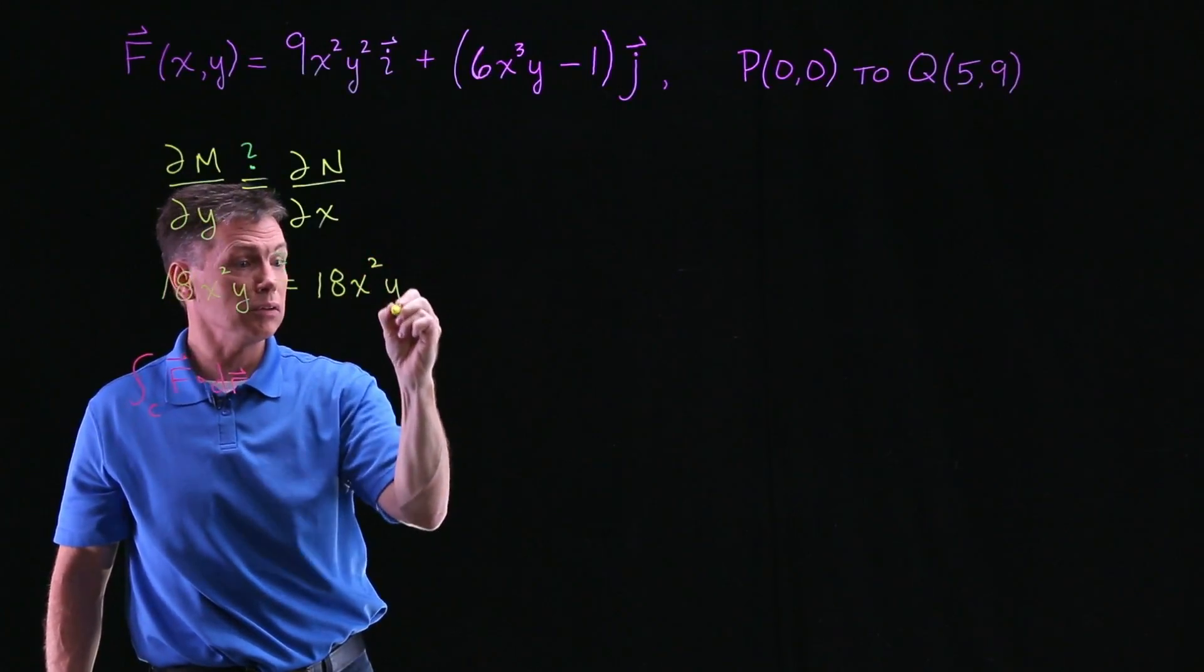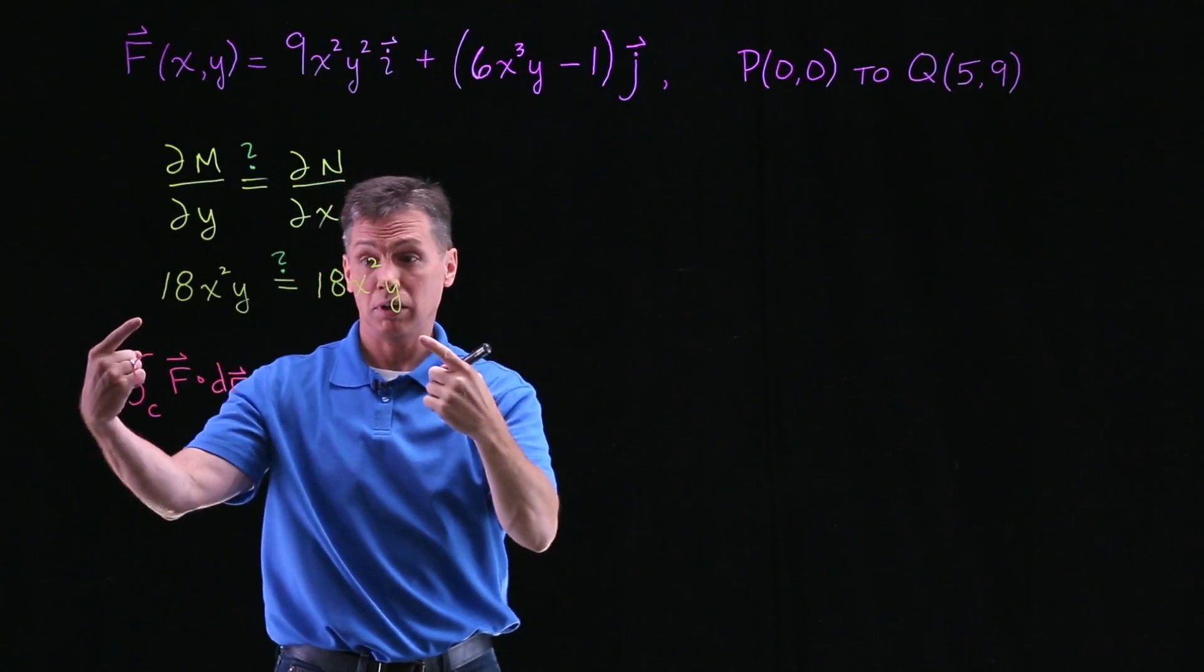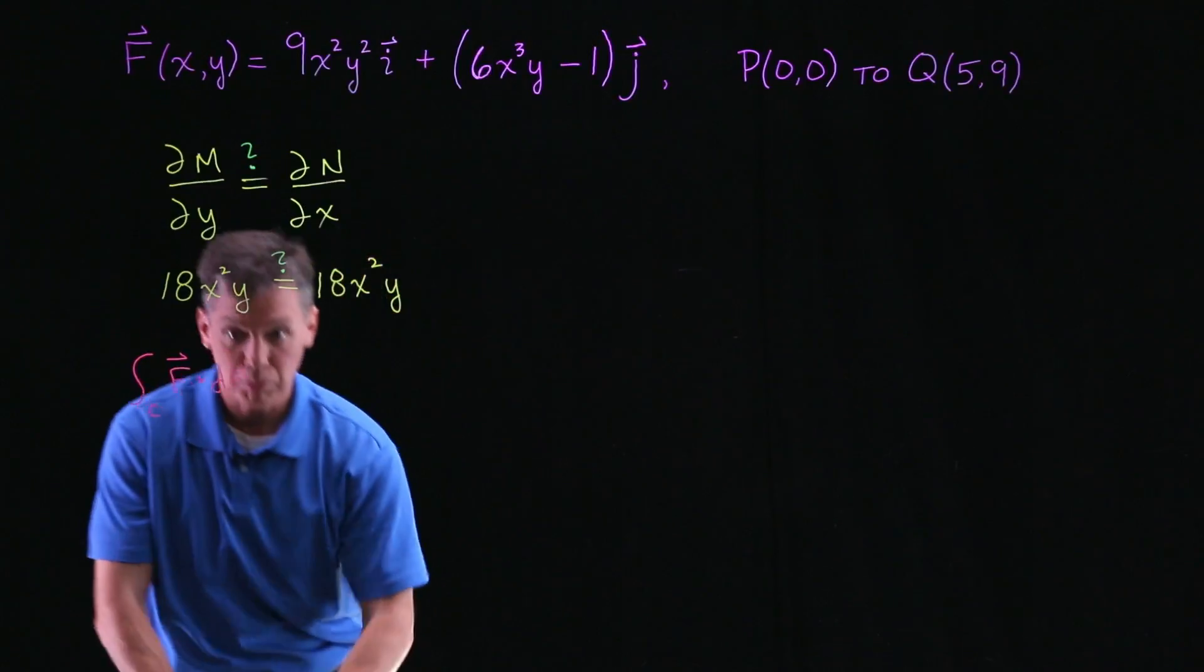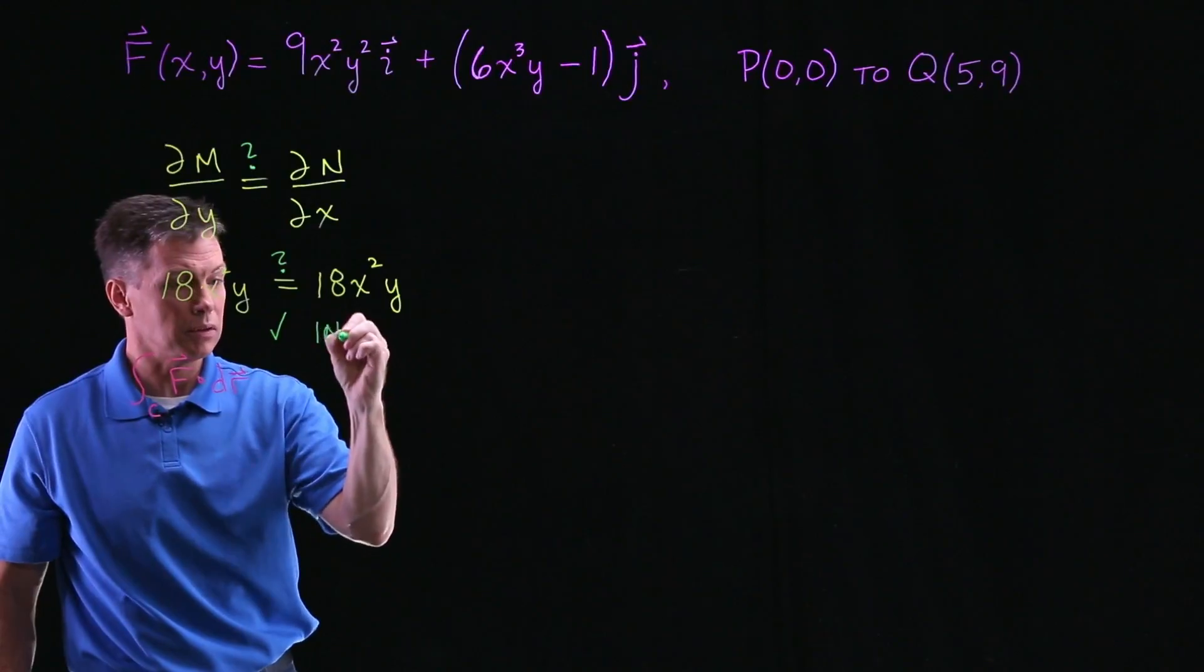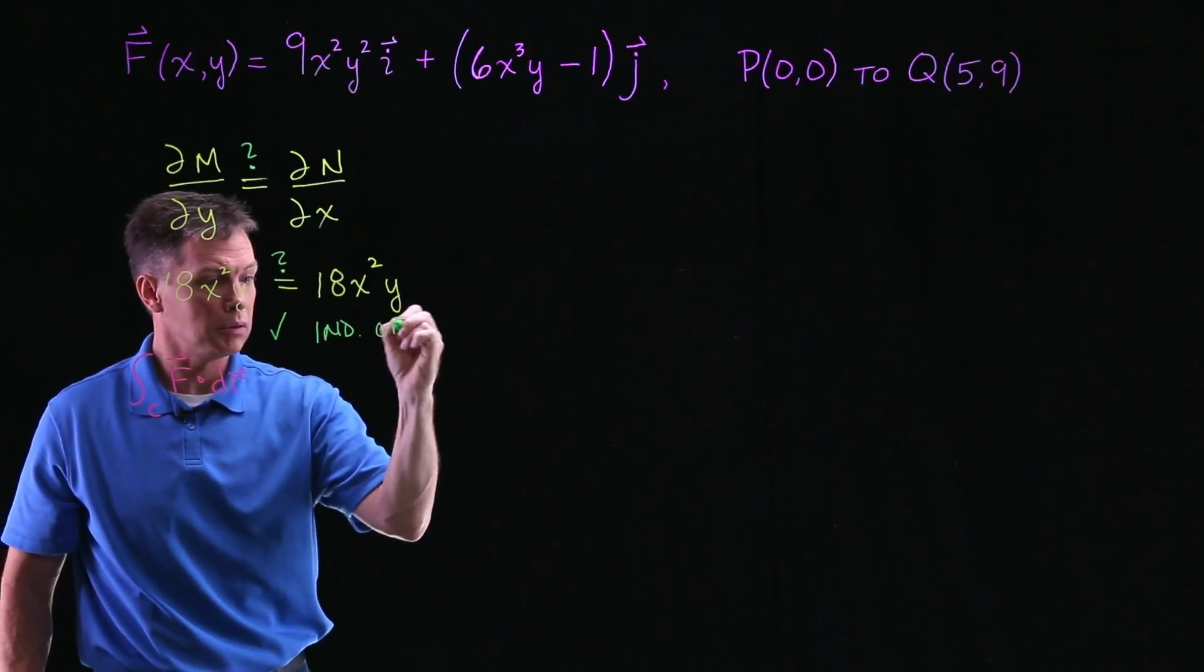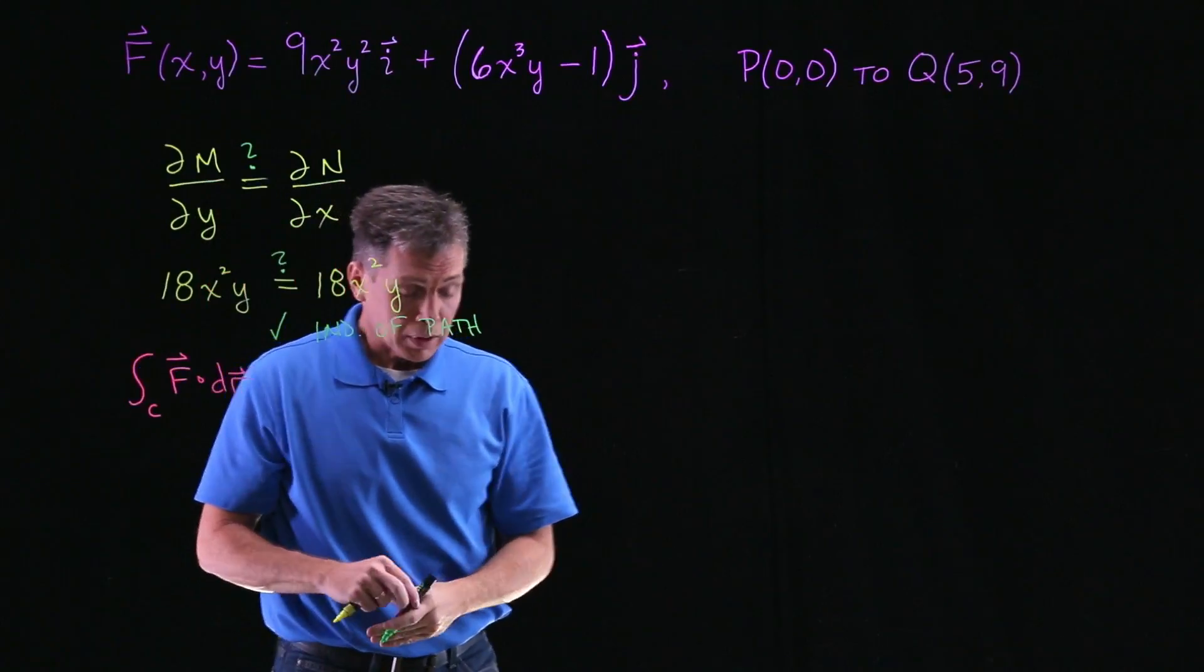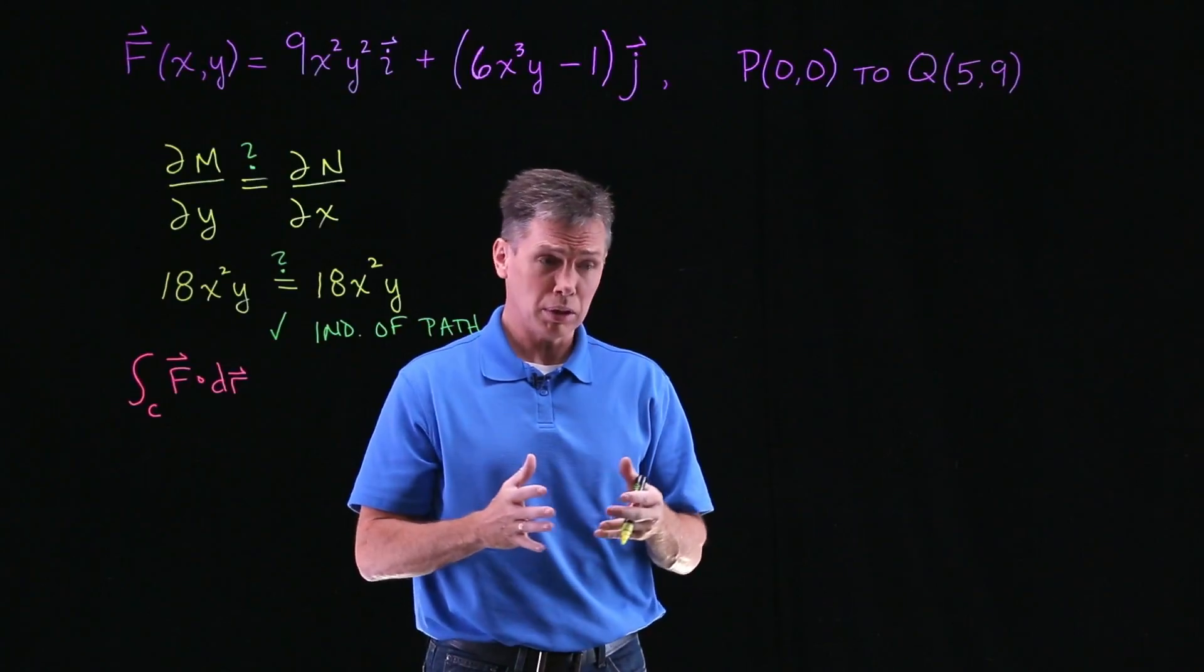The Y is a constant and the derivative of 1 of course is 0. So take a look, those two are the same, so we get a check mark here, a check mark in terms of independent of path. This is actually really important for us in this problem.